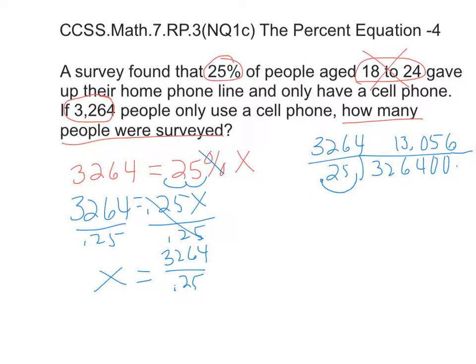So that means that X is 13,056 were surveyed. How many people were surveyed? 13,056. And 25% of those people used cell phones, but the total number surveyed was 13,056.